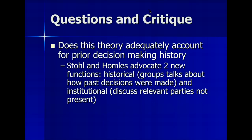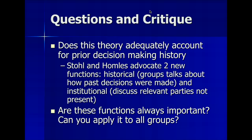Some people say this theory doesn't actually take into account prior decision-making history — groups have history together. Stolman has proposed two different kinds of new functions: the historical, where groups talk about how past decisions were made, and the institutional, where you think about who's affected by the decisions made within a group. And are these group functions always important? Is it possible to have success as a group without actually moving through these functions? Two questions you might want to think about for the discussion board.